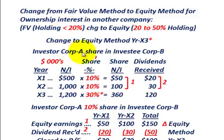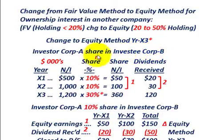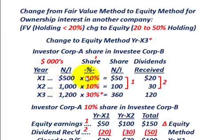We're going to have investor corporation A with a share in investee corporation B. They've made this investment in corporation B, and we're going to be looking at three years: year X1 and year X2. In those years, investor corporation A has a 10% interest in investee corporation B — they hold 10% of corporation B's outstanding stock.